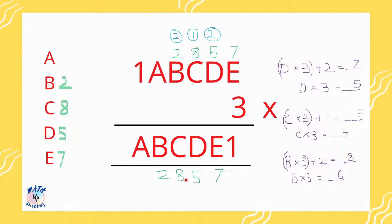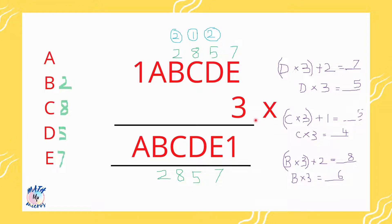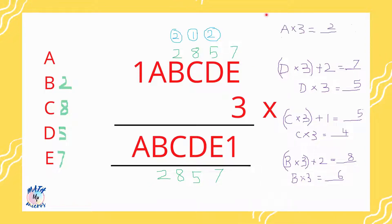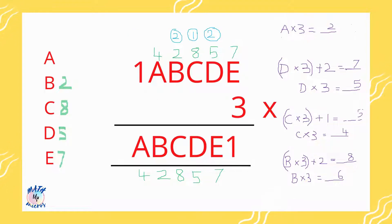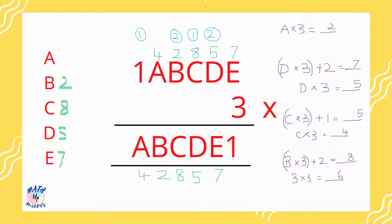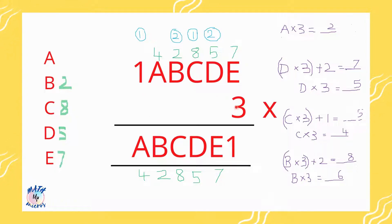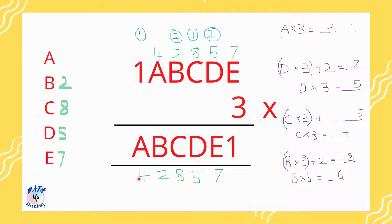Now moving to the next digit, a. a times 3 gives a number ending in 2, so a is 4 since 4 times 3 is 12. I place 2 here and 1 is carried over. Then 1 times 3 is 3, plus the carried-over 1 gives 4, which is here. So a is 4 and I note it down.